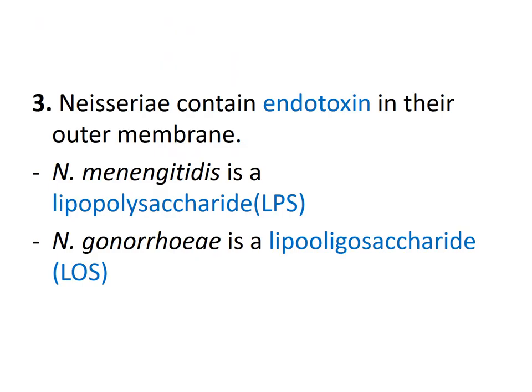Another important property is that Neisseria contain endotoxin in their outer membrane, as they are gram-negative bacteria. The endotoxin is found in gram-negative bacteria, with some structural differences. For Neisseria meningitidis, the endotoxin is LPS — lipopolysaccharide — while for Neisseria gonorrhoeae, the endotoxin is a lipooligosaccharide.